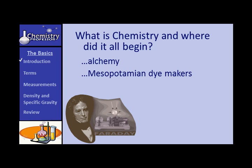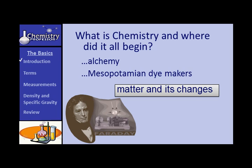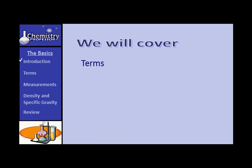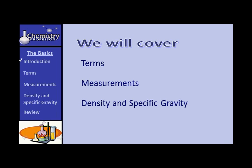Did it begin with the Mesopotamian dye makers — those people who would work magic with colors in the dyeing of fabrics? In any case, chemistry is the study of matter and the changes that matter undergoes. Importantly, our knowledge of chemistry continues to change. We'll briefly cover some terms we think you probably already know, mention a few you might not be sure about, talk about measurements, density, and specific gravity, and then do a quick review.